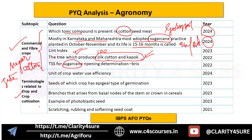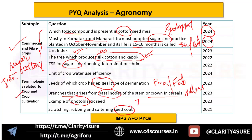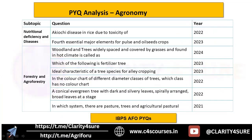Under terminologies related to crop cultivation, questions were asked about epigeal type of germination — you need to know which family has epigeal and which has hypogeal germination. Branches that arise from basal nodes of the stem in cereals are tillers. Photoblastic seed was also asked, along with the term for scratching, rubbing, and softening of seed coat — that is scarification.